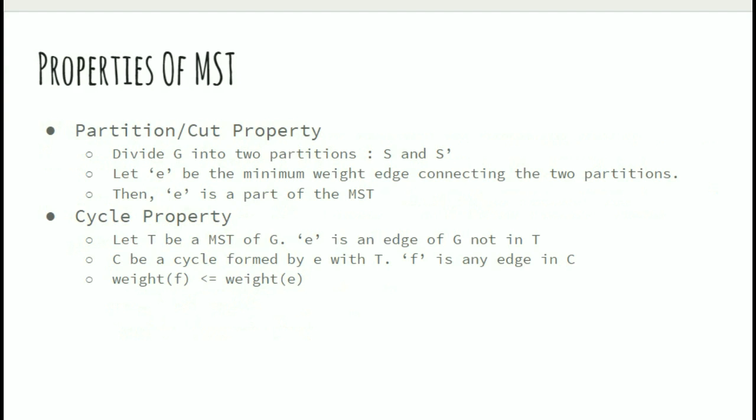When talking about MST, we come across two major properties. The partition or cut property: divide G into two partitions S and S'. Let e be the minimum weight edge connecting the two partitions. Then e is part of the MST.